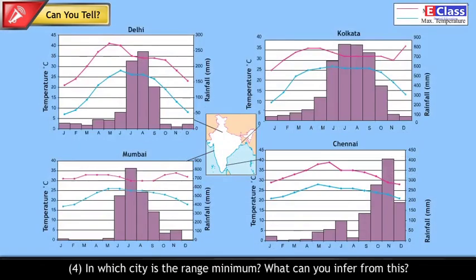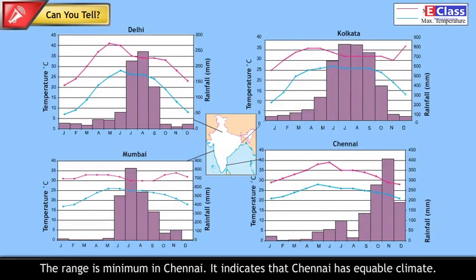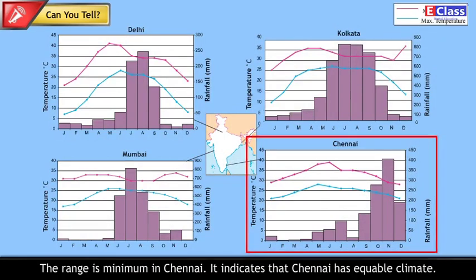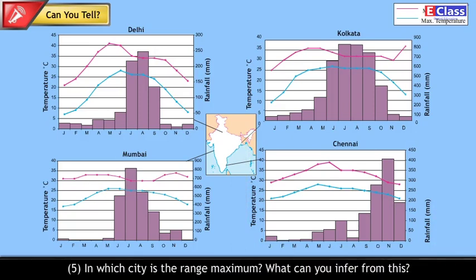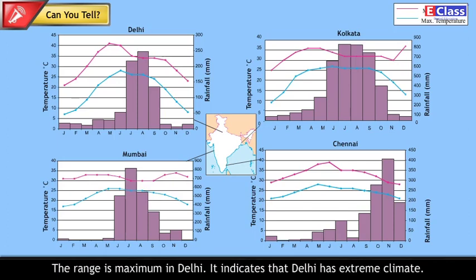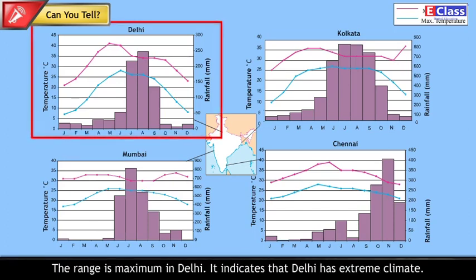In which city is the range minimum, and what can you infer? The range is minimum in Chennai, indicating that Chennai has an equable climate. In which city is the range maximum, and what can you infer? The range is maximum in Delhi, indicating that Delhi has an extreme climate.